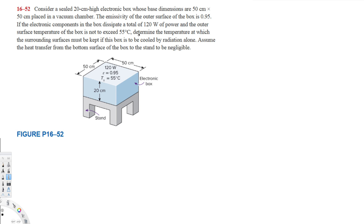The question is asking us to find the temperature of the surroundings, and this is radiation alone. We also assume the heat transfer from the bottom surface of the box to the stand is negligible, so we neglect the bottom surface. Since this is related to radiation, we use the radiation energy equation: Q-dot, the heat transfer rate by radiation.